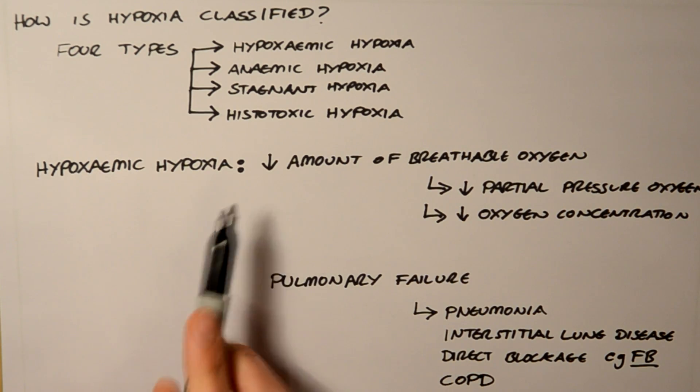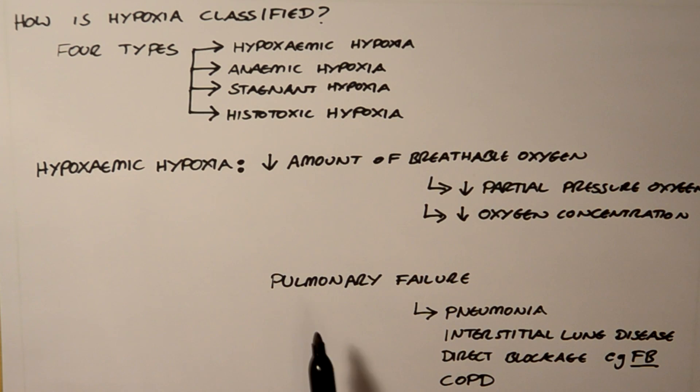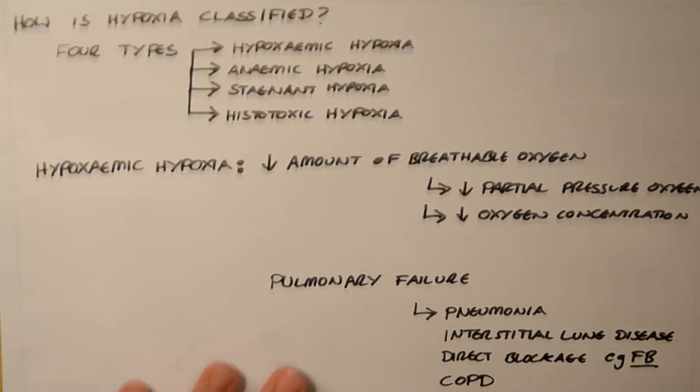So these are the two types. Hypoxemic hypoxia is either decreasing the amount of breathable oxygen, or there's a failure to get the oxygen that's available from the lungs to the blood.